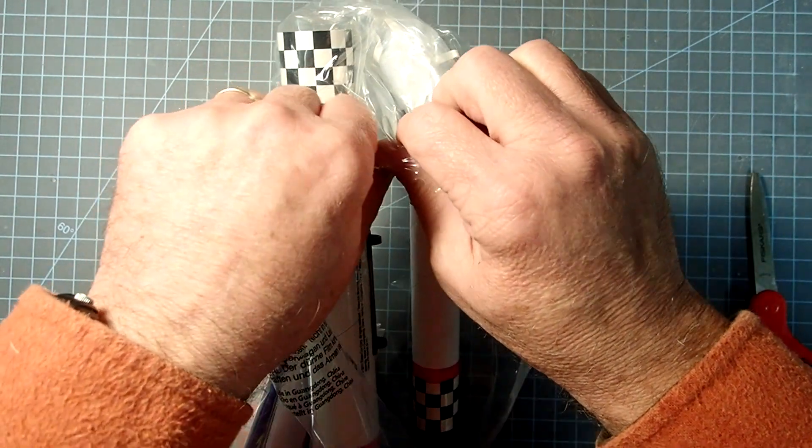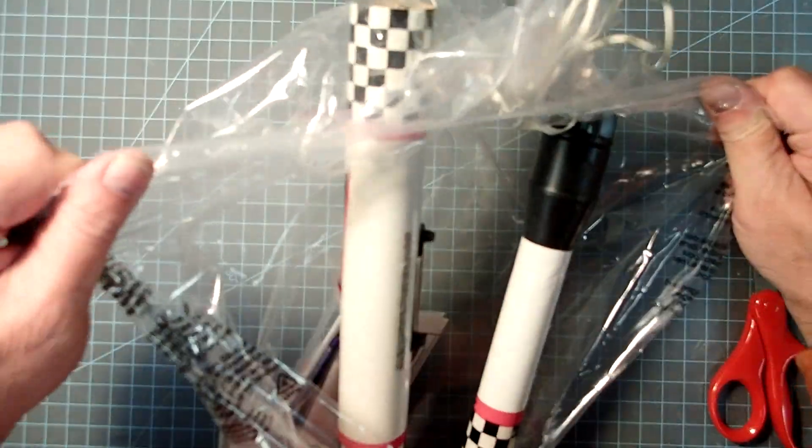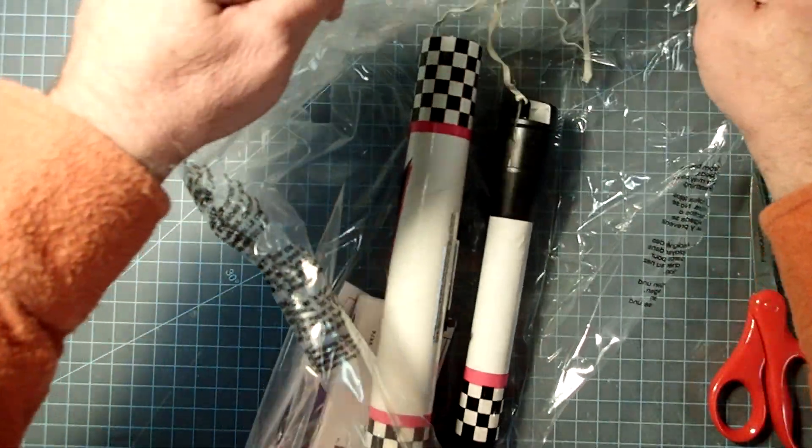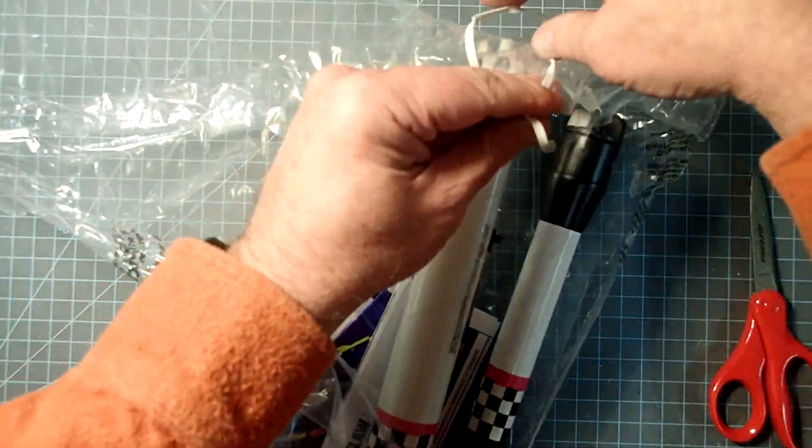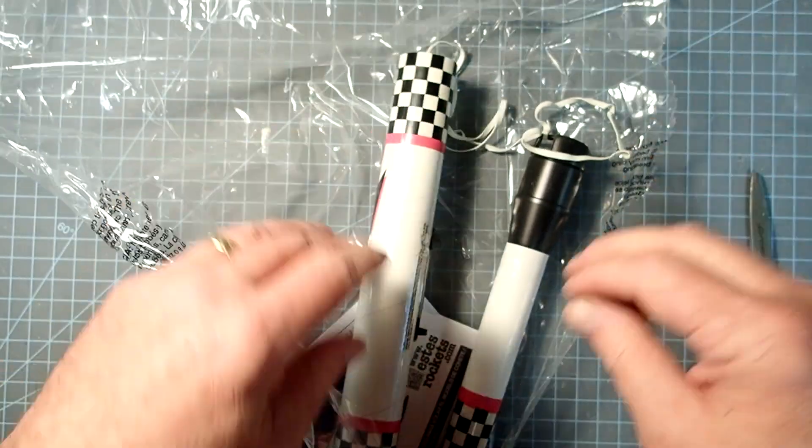Inside the box, the rocket is packaged with an excess of plastic here. So when you cut this open, be careful not to cut things like this shock cord here that's already attached to the model.